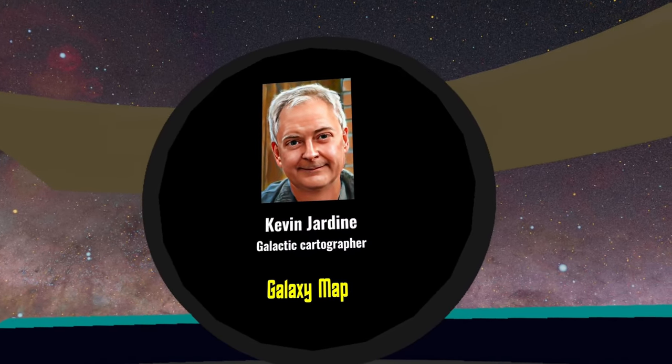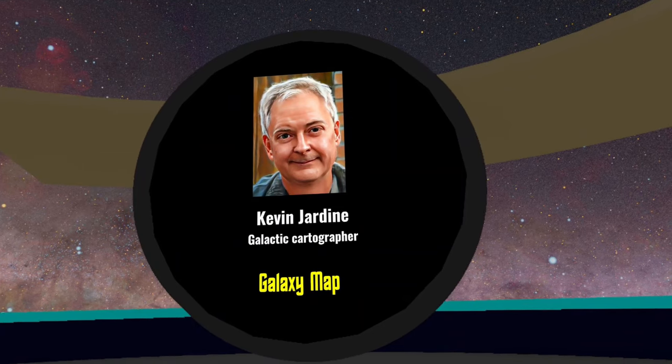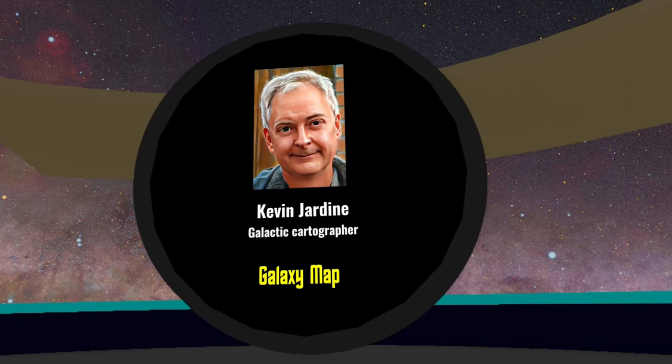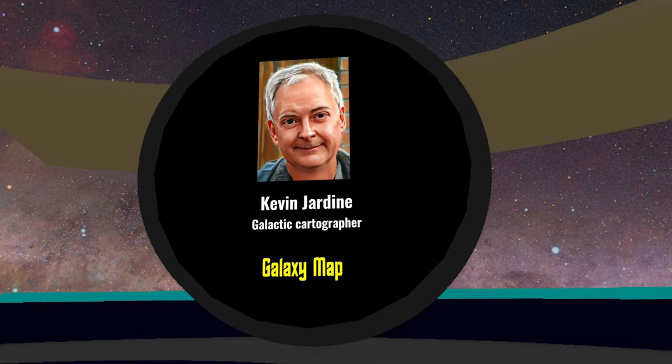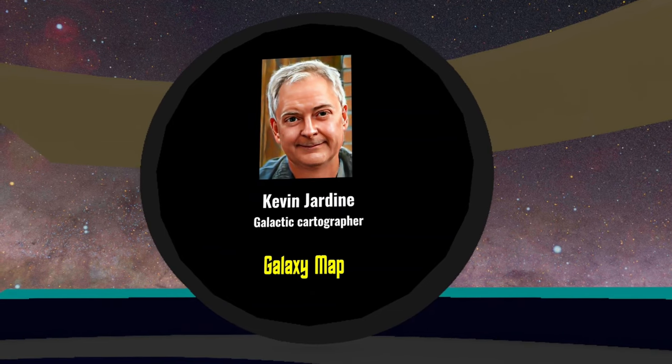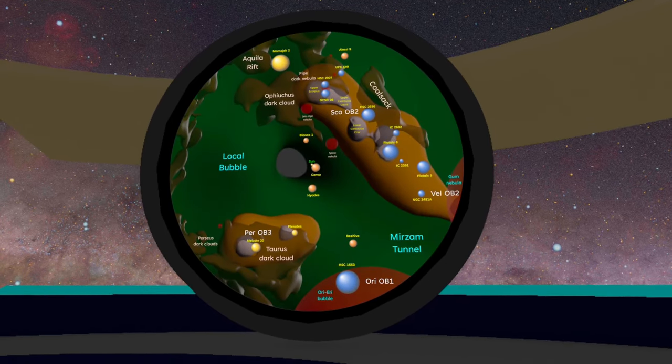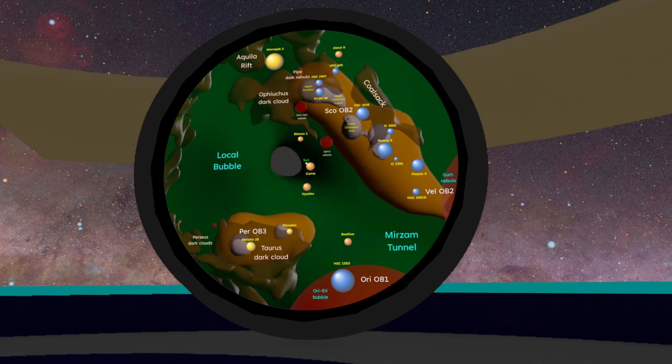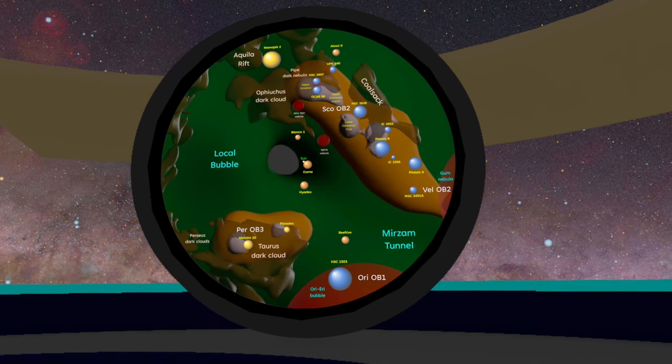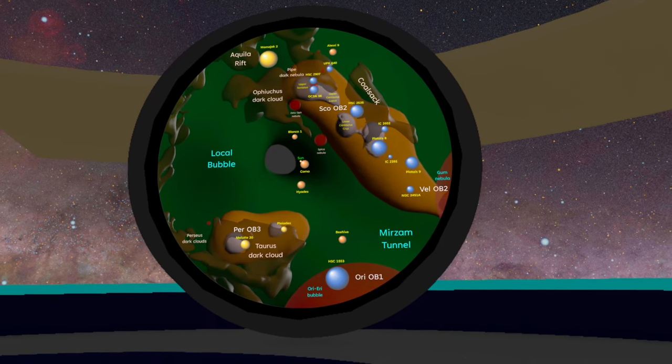Welcome Starfarer. My name is Kevin Jardine and I'm a galactic cartographer. I make maps of our home galaxy, the Milky Way. I built this starship so that we can travel the Milky Way to explore and be amazed together.